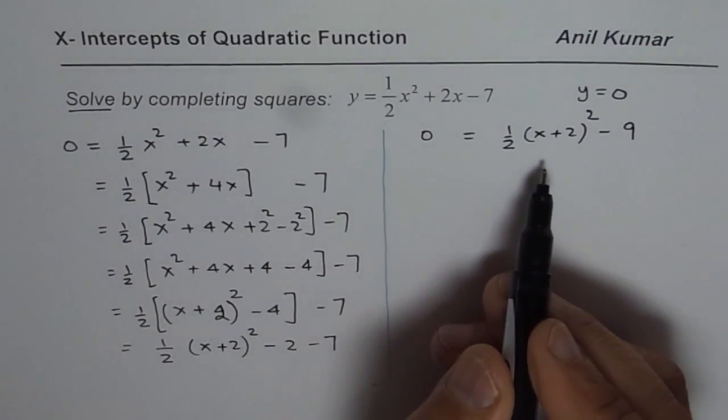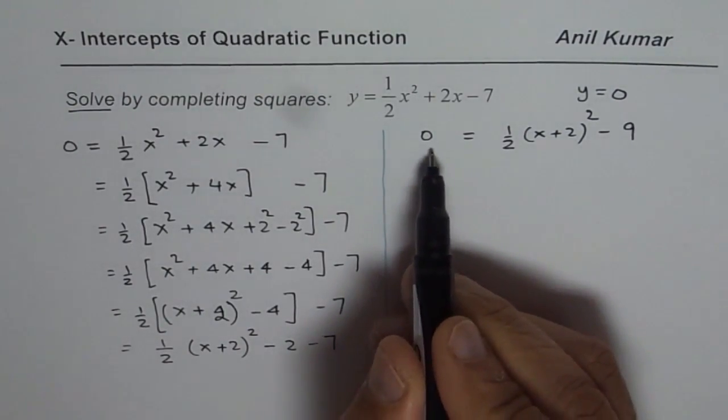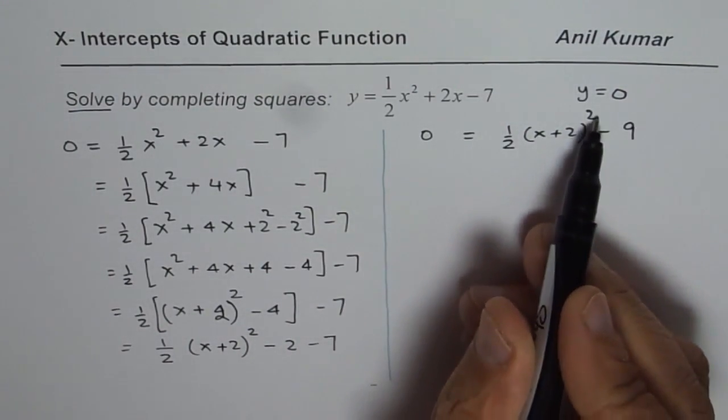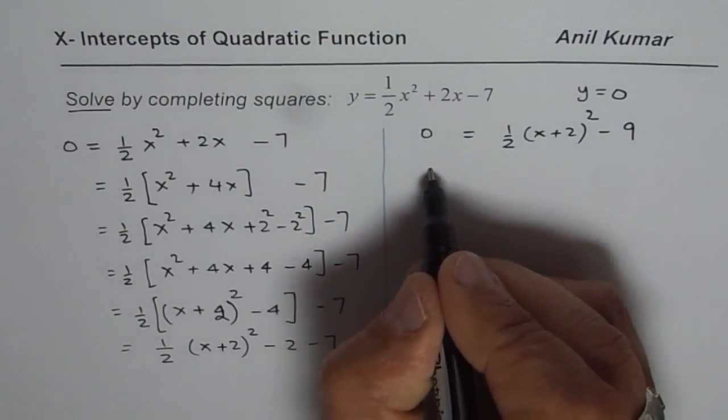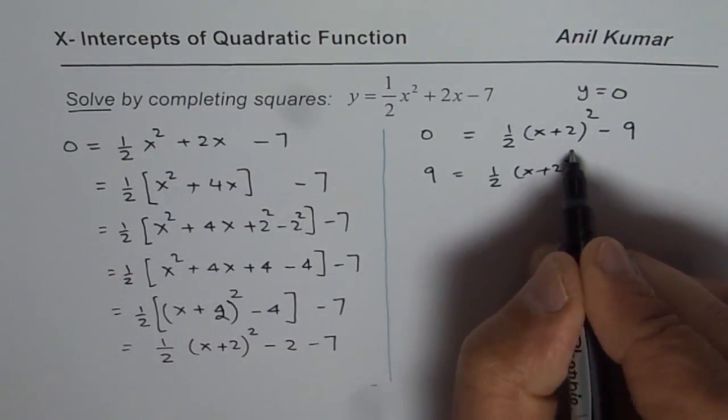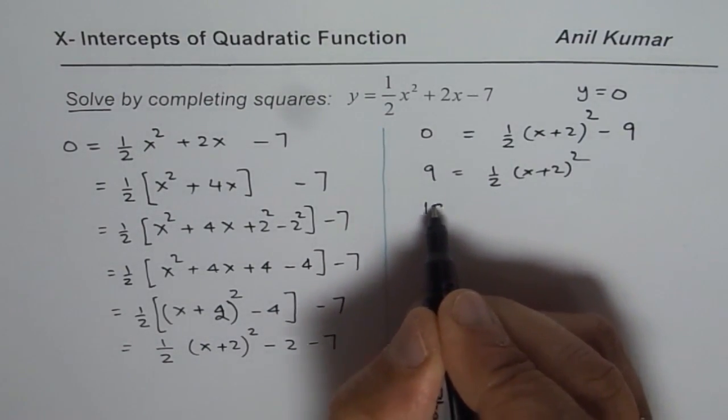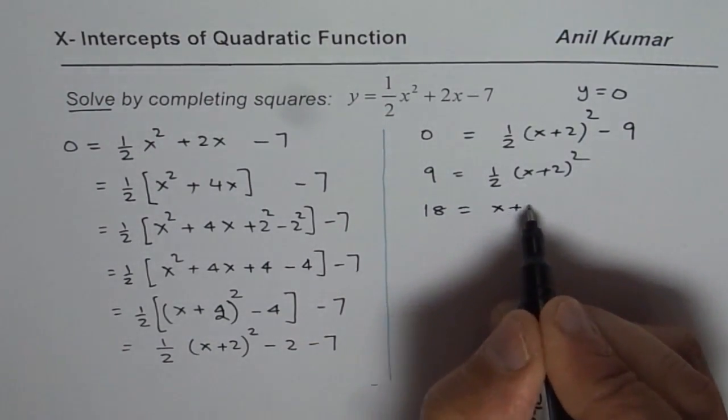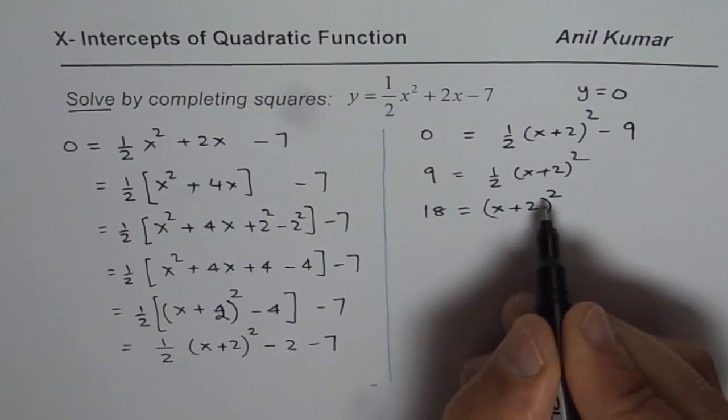Now to solve this equation, we need to take 9 to the left side, multiply by 2 and then square root. So we get 9 equals to half of x plus 2 whole squared, multiply by 2, 18 equals to x plus 2 whole squared. Now square root.